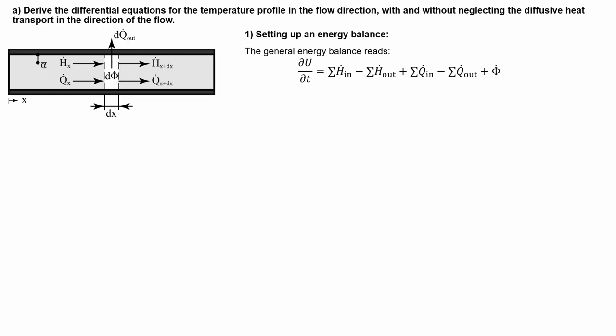In cases where we have a relatively high mass flow, the convective terms are much bigger compared to the diffusive terms, and for this reason, diffusion is often neglected in those cases. So we have defined all relevant terms for our energy balance, and if we substitute them into the balance, it will change to this.